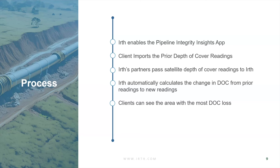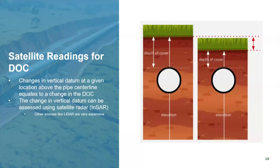We then automatically calculate the change in depth of cover from the prior readings to the new readings using satellite imagery. The most important thing is that customers can visualize the areas that have the most depth of cover loss. We're looking at vertical data — when you give us a lat-long with a prior reading, we point the satellite at that exact location. What we're using is called InSAR, which can actually penetrate through cloud cover. We look at locations above the pipe's centerline, and once we have the InSAR data, we can see the change in elevation over time. We can run this every year or at any defined frequency.